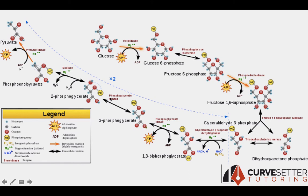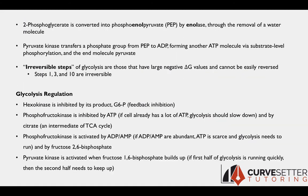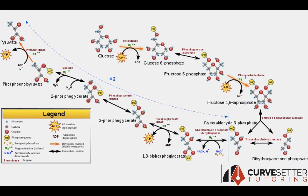Gluconeogenesis is simply the reverse of glycolysis. Any steps that aren't irreversible are, of course, reversible. Those reversible steps can occur in both directions using the same enzyme, which means that enzyme is going to be common to both glycolysis and gluconeogenesis. The steps that are regulated are the steps that are irreversible, and you should know what each enzyme is inhibited or activated by.